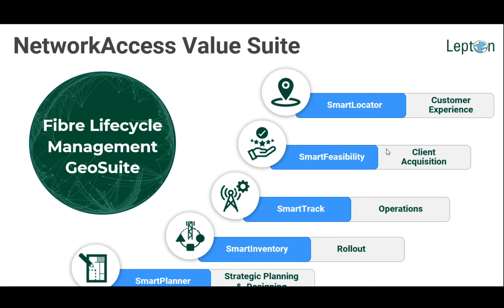SmartTrack is a mobile-first solution that allows operators to conduct field operations like splicing, identifying assets on the field, capturing pictures, and feeding information back to central office planners and designers. Smart Feasibility, once a network is built, allows you to quickly find out if there is coverage available at a customer location, or if not, identify the nearest access point and calculate the cost of building that piece of network to connect the customer. It supports creating BOMs and BOMQs in an automated manner — all it takes is the customer location and the nearest access point.